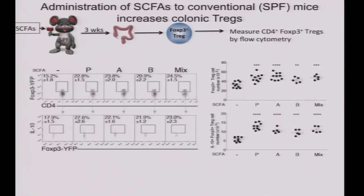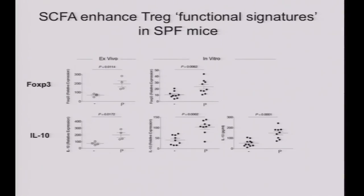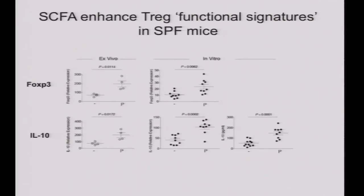In conventional mice, we put short-chain fatty acids into drinking water, waited two to three weeks, and saw increases in population frequency and number. We also looked at IL-10, and saw that the IL-10-producing Treg subset was also augmented. We again saw increases in functional signatures looking at FOXP3 and IL-10 from Tregs directly isolated from the mice. Each symbol represents data from many mice, since you get roughly 20,000 to 40,000 Tregs per mouse colon.